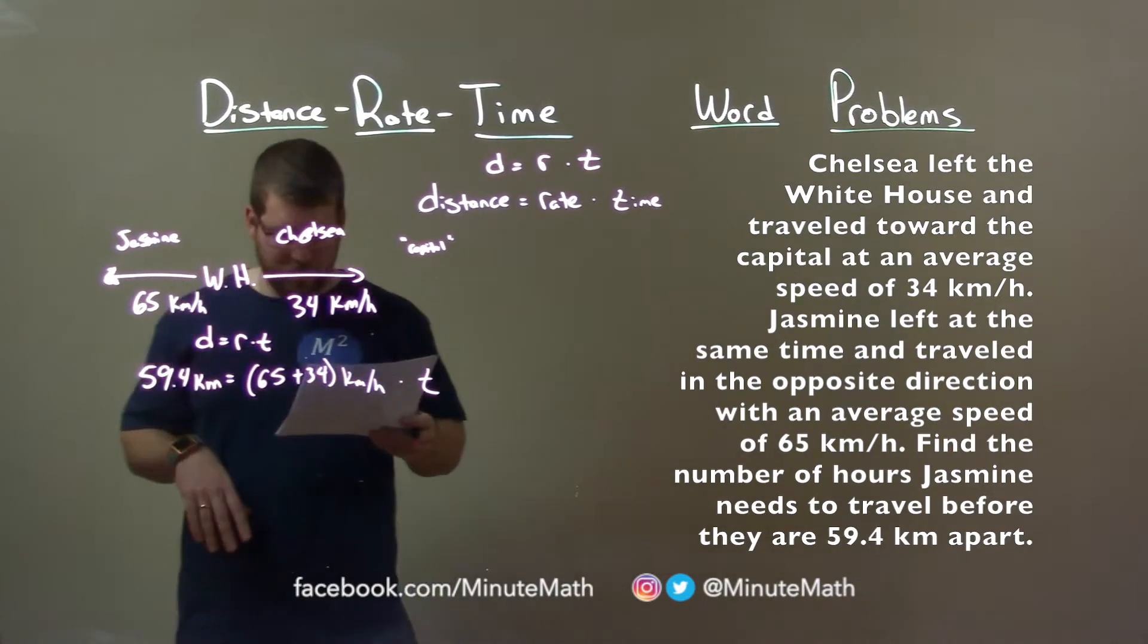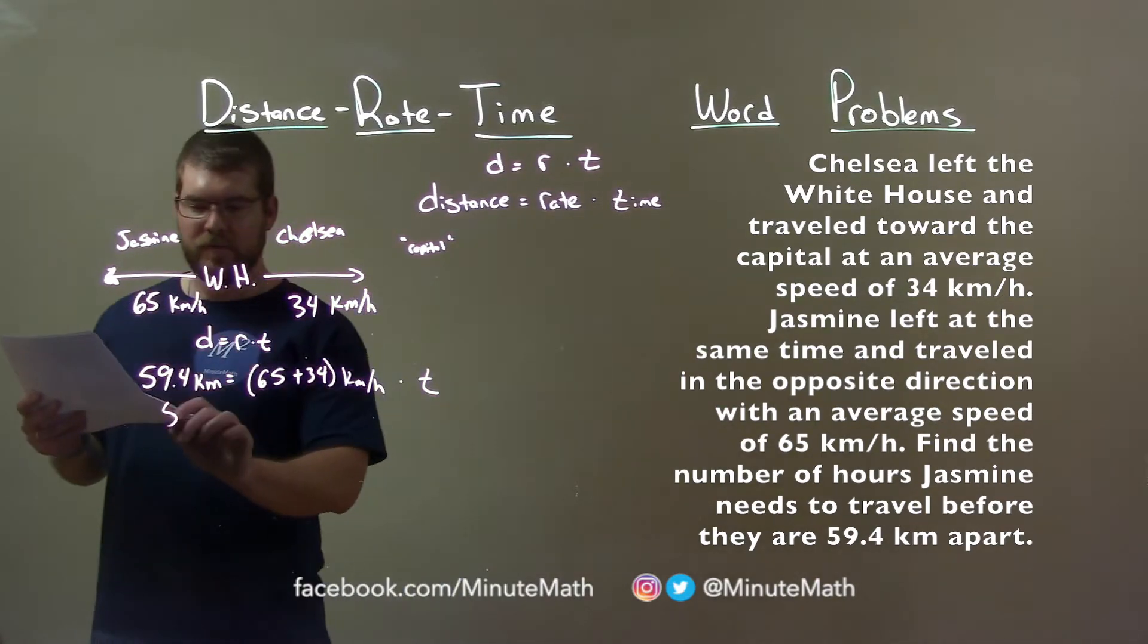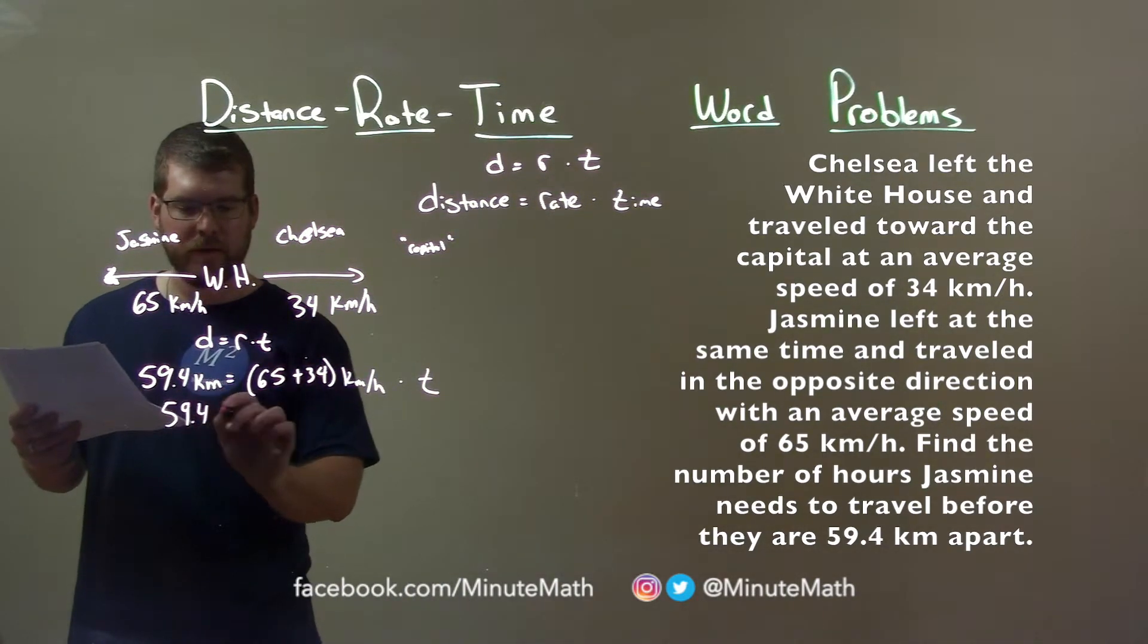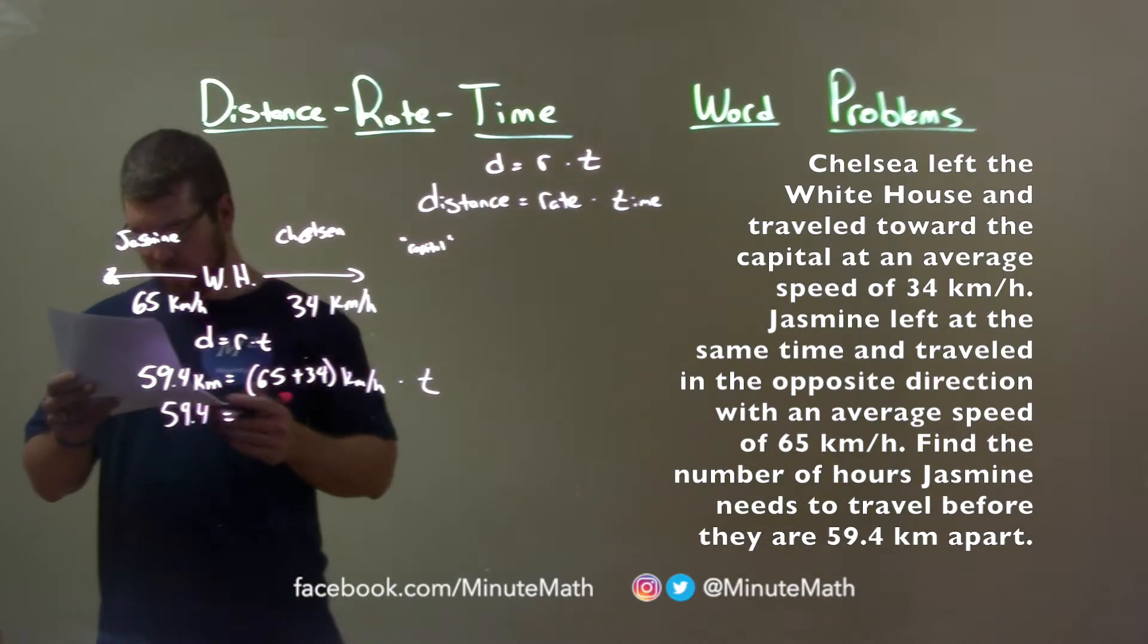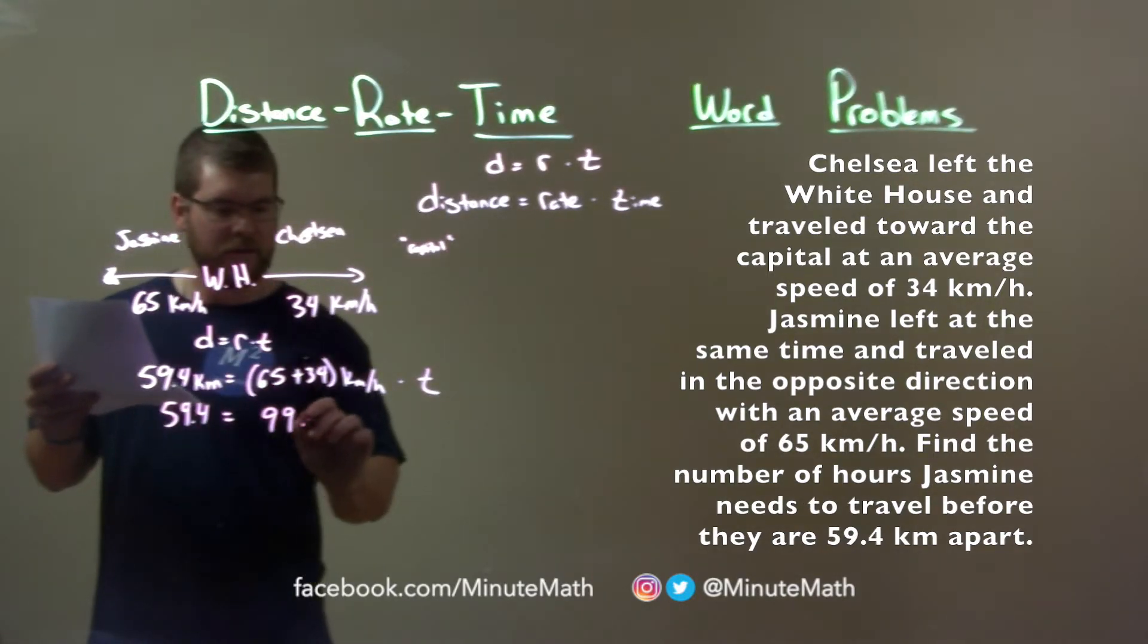Alright, so now we have a problem. Let's go solve. 59.4 equals 65 plus 34, which is 99, times T. Divide both sides by 99.